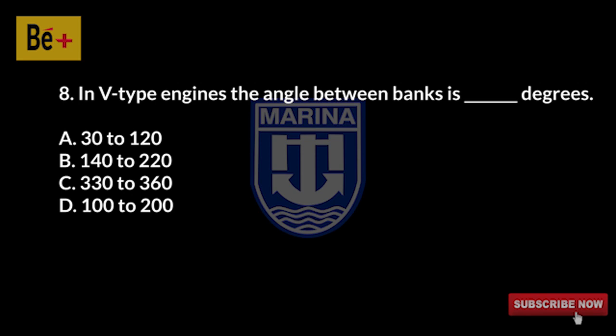In V-type engines, the angle between banks is: A) 30 to 120 degrees, B) 140 to 220 degrees, C) 330 to 360 degrees, D) 100 to 200 degrees. The answer is A, 30 to 120 degrees.